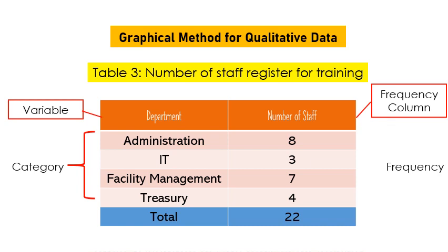The table components are: variable, category, frequency in the top column, and total at the bottom.